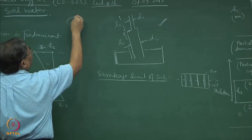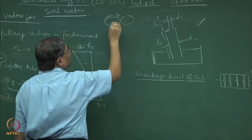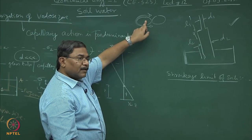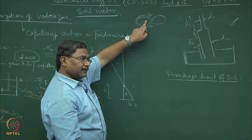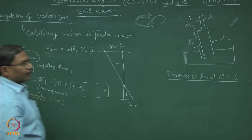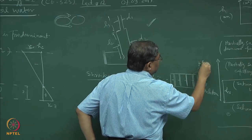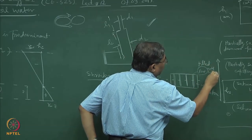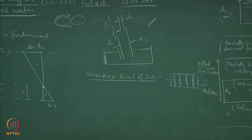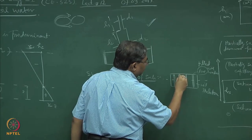The best way to define shrinkage of the material: you remember I had drawn the free body diagram of two grains. What does surface tension do? It brings particles closer to each other. Water is under tension, so soil is under compression.